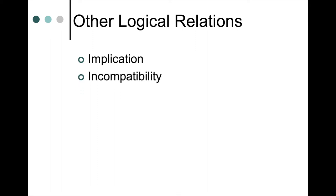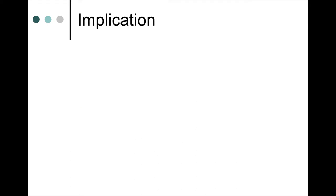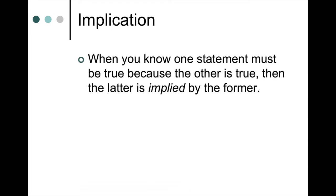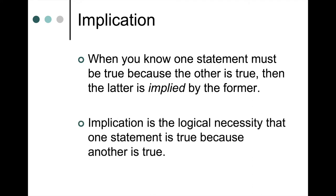But there are other logical relations we want to learn. First is implication, then incompatibility, contradictory statements, contrary statements, and statements that are sub-contrary. We will examine these with examples one at a time. Implication occurs when you know one statement must be true because the other statement is true — that is, the truth of the latter statement is implied by the truth of the former statement. So implication is the logical necessity that one statement is true because another statement is true.